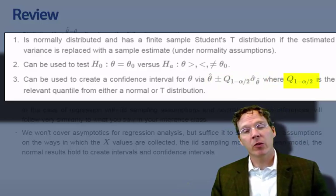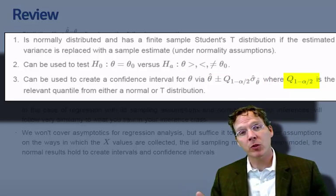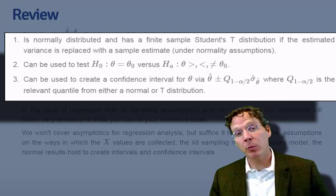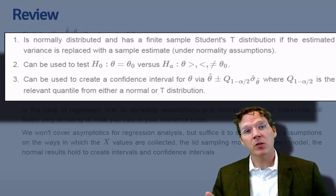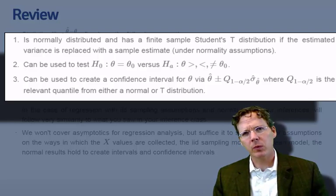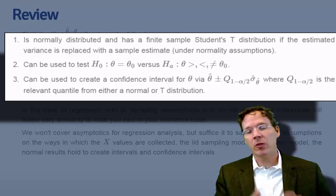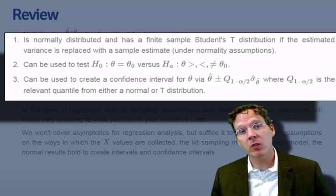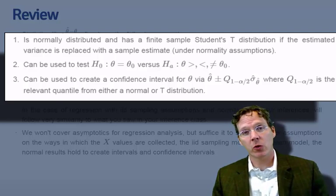where q is the relevant quantile, and we always take the 1 minus alpha over 2 quantile. For example, if our alpha is 5%, so we want a 95% confidence interval, we take the 97.5th quantile. And this is either going to come from a normal distribution or a t distribution. So hopefully none of these facts are news to you after having had the statistical inference class.